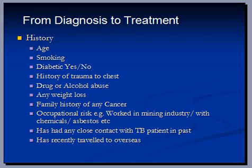Age also plays an important role in diagnosing the type of pneumonia. It helps in identifying if the culprit is a virus, bacteria, or mycoplasma. Pneumonia in children, for example, is mostly caused by viruses, though there are frequent exceptions. Children under 5 years of age are not affected by mycoplasma. High-grade fever is most likely caused by bacterial infections.